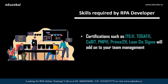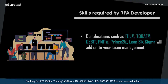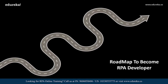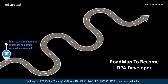Now let me take you through a roadmap on how to become an RPA developer. An RPA developer's journey starts with understanding the client's requirements — learning to analyze business processes and design automations around them. Once you understand the requirements, come up with the technical specifications document. The next learning phase involves developing an understanding of which processes can be automated and which cannot.